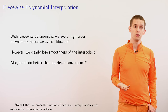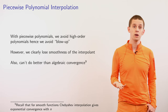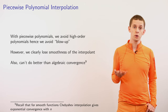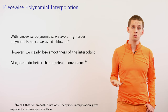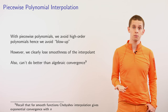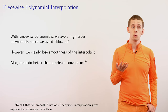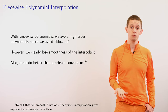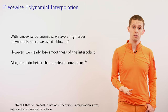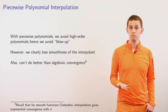With piecewise polynomials we can often work with lower-order polynomials, and that can avoid some of the difficulties with higher-order polynomials that we sometimes get with Runge's phenomenon and blow-up. However, one issue with lower-order polynomials is that we often lose some smoothness — as we saw in the linear spline example, every time we cross over a data point we have a loss of differentiability. In addition, one benefit of the Chebyshev approximation scheme was that we could achieve exponential convergence, whereas here with lower-order polynomials we would typically get algebraic convergence.